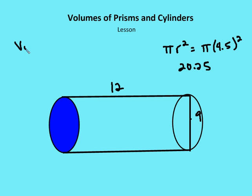So remember the volume of a cylinder is equal to the base area times the height. We just found the base area to equal 20.25. We know the height is 12. We multiply 20.25 times 12, and we get 243 units cubed.